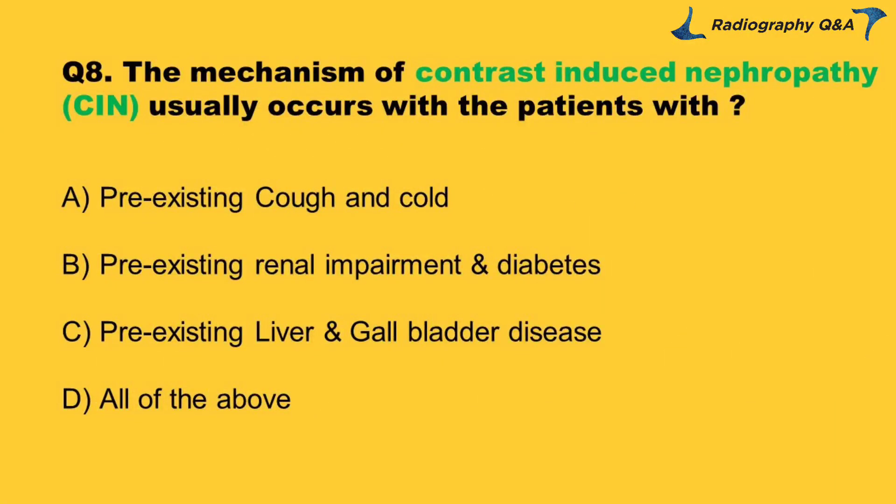Question 8: The mechanism of contrast-induced nephropathy (CIN) usually occurs in patients with: Option A: pre-existing cough and cold. Option B: pre-existing renal impairment and diabetes. Option C: pre-existing liver and gallbladder disease. Option D: all of the above. Right answer is Option B.